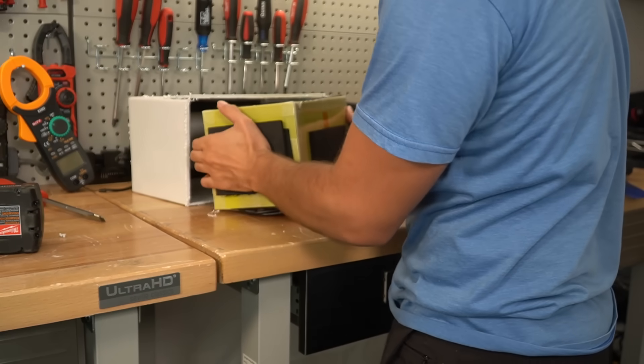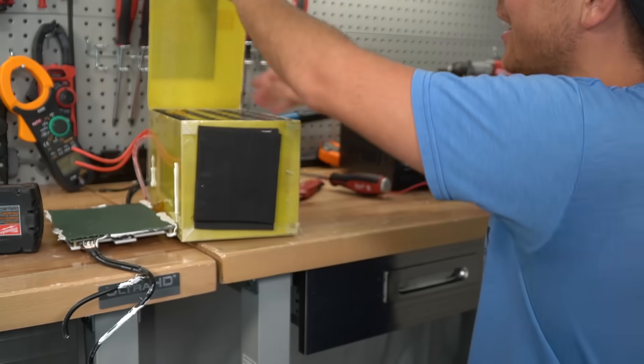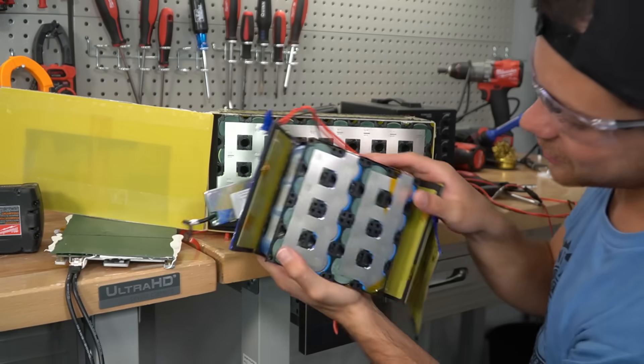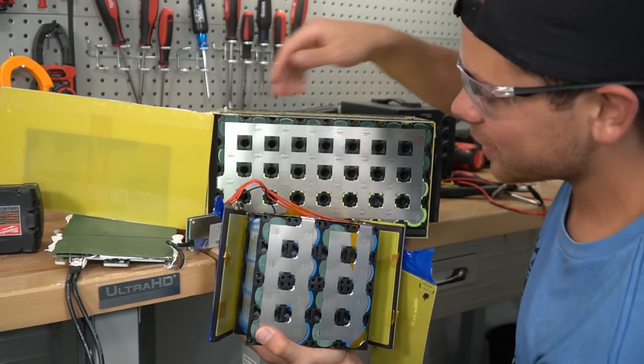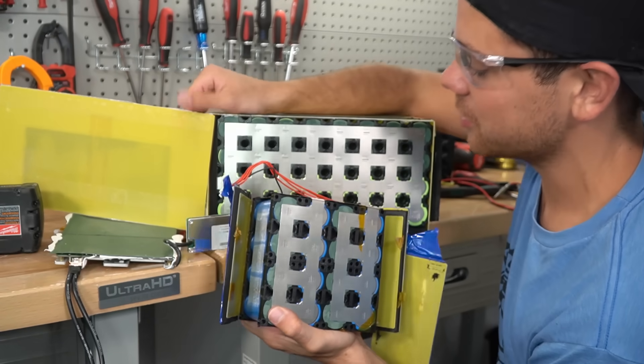That was hard. They love that glue and tape over here in China. Well what do you know? They're using the same cells as their other models. That would explain why we got the same capacity results.